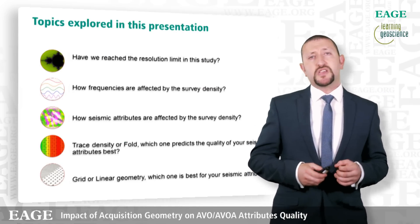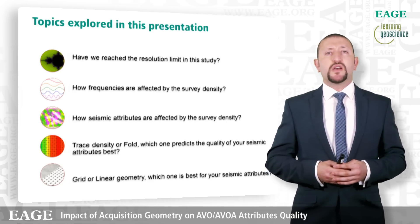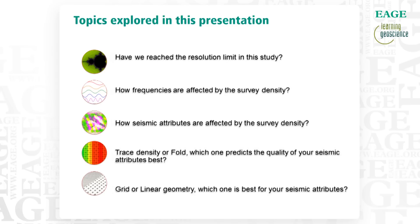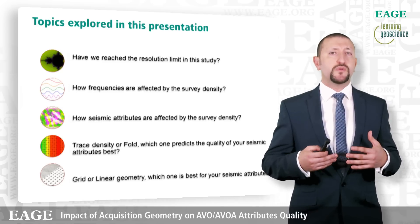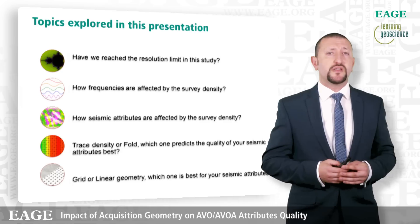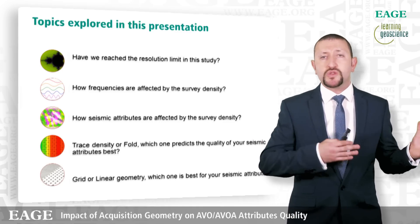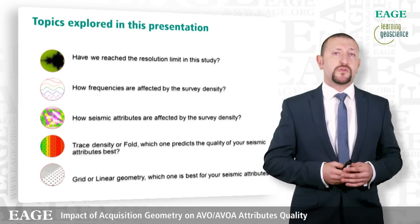The topics explored in this study are: first, whether we have reached that resolution limit we just talked about; second, how frequencies are affected by survey density; third, an extensive list of seismic AVO and AVOA attributes and how they are affected by survey density; fourth, trace density and fold — the two parameters that often describe survey density — and which one helps you predict attribute quality best; and finally, whether there is any difference between acquiring your survey in a grid or linear geometry, that's nodal style versus cable style, for your AVO and AVOA attributes.